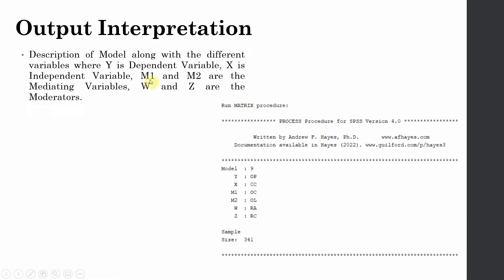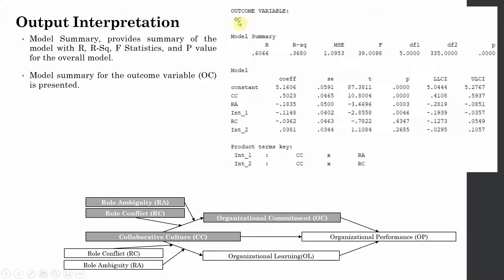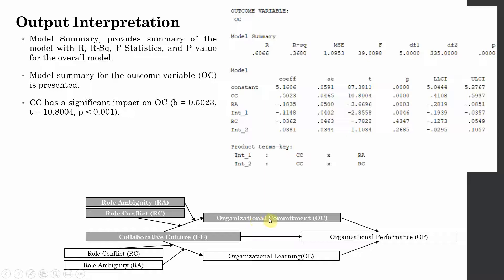Your output interpretation: the first thing that you will see is this summary. Make sure that you check it just to be sure that you have got the right model with the right variables. The first outcome variable is organizational commitment, affected by collaborative culture and the interaction of these moderators with collaborative culture. Collaborative culture has a significant influence on organizational commitment — the p-value is less than 0.05.